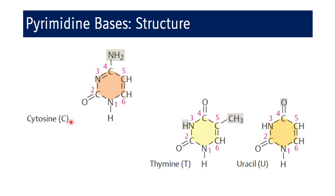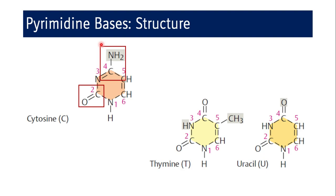Coming to the individual structure of cytosine, thymine, and uracil — the chemical names are derived from the groups attached to the carbon atoms of the pyrimidine ring. For cytosine, there is an oxy group at the second carbon atom and an amino group at the fourth carbon atom, so the chemical name of cytosine is 2-oxy-4-aminopyrimidine.